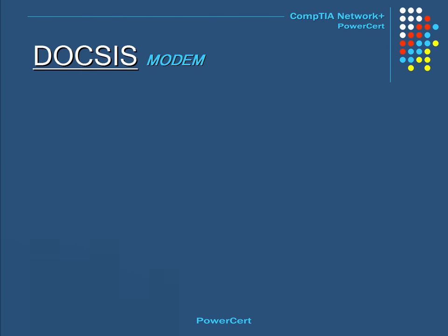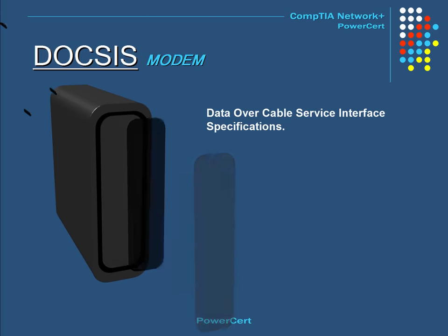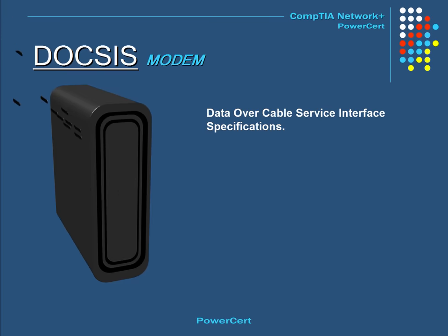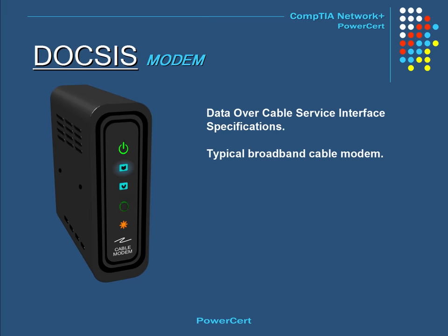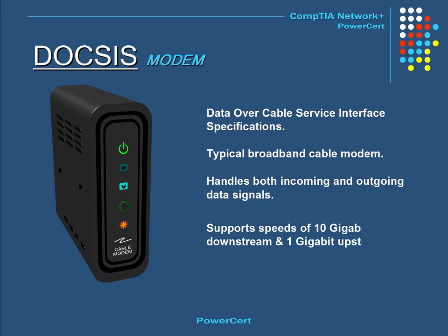Another standard is called DOCSIS, which stands for Data Over Cable Service Interface Specifications. Those with broadband cable internet will recognize the typical DOCSIS cable modem. The DOCSIS modem handles both incoming and outgoing data signals, including internet, video, and voice. The DOCSIS 3.1 specification supports speeds of 10 gigabits downstream and 1 gigabit upstream.